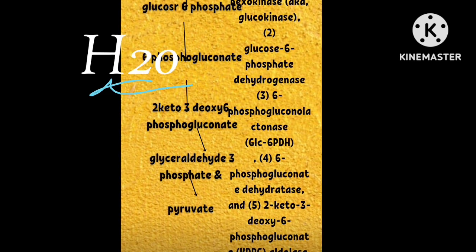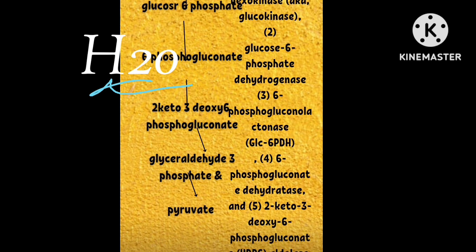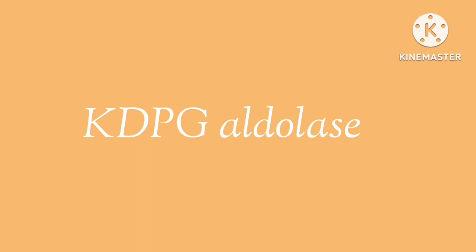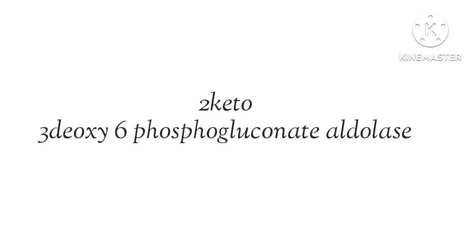The conversion of 2-keto-3-deoxy-6-phosphogluconate (KDPG) to pyruvate and glyceraldehyde-3-phosphate is carried out by the enzyme KDPG aldolase, also known as 2-keto-3-deoxy-6-phosphogluconate aldolase.